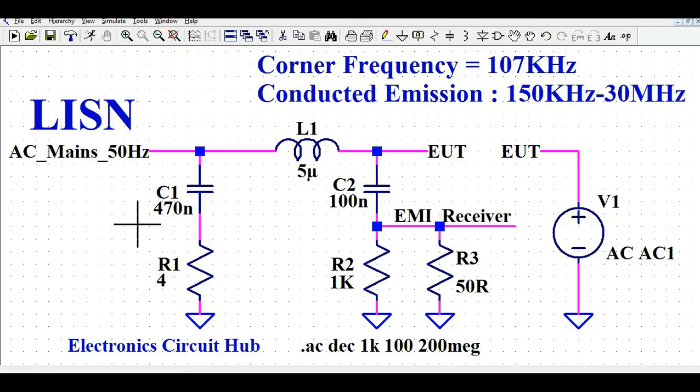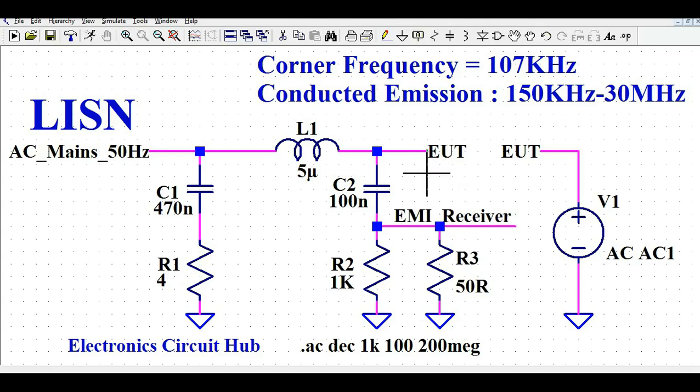LISN is widely used in EMC testing. In conducted emission testing, LISN is used to stabilize the output impedance — that is why it is called a Line Impedance Stabilization Network. It stabilizes the impedance wherever you connect your DUT.